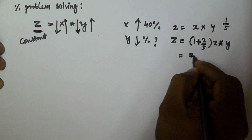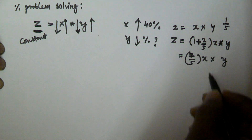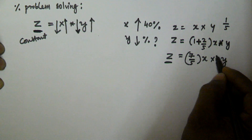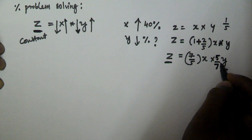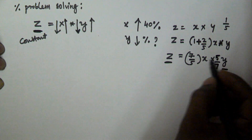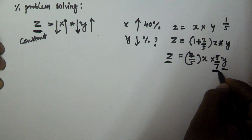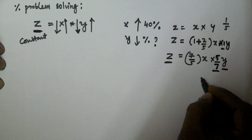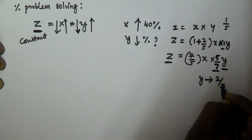So z = (7/5)x × y. To keep z constant, we must multiply y by 5/7. That way, 7 and 7 cancel, 5 and 5 cancel, and z becomes x·y again. Initially x was increased by 40 percent, making it 7/5. So we multiply y by 5/7.